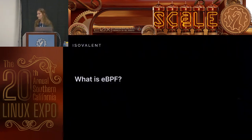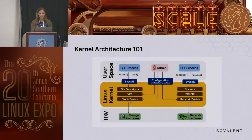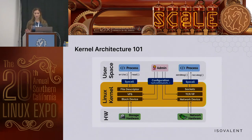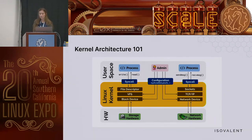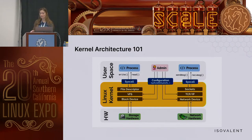How does eBPF come into the picture, and what is eBPF? I'll start with a small intro to kernel architecture — this is going to be a one-on-one. We have three spaces: user space on the top, kernel in the middle, and the hardware at the bottom. I put storage and network there, but there are many more. I tried to simplify it as much as I could.